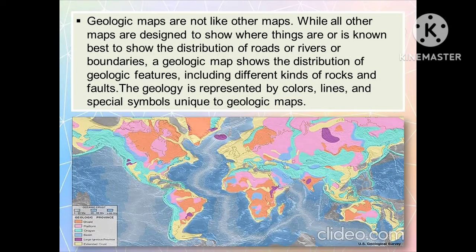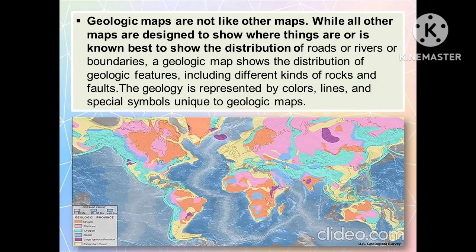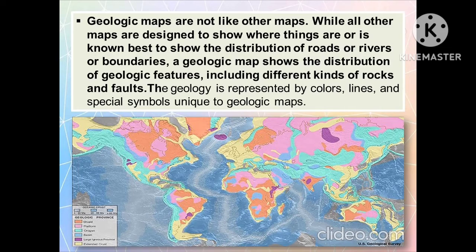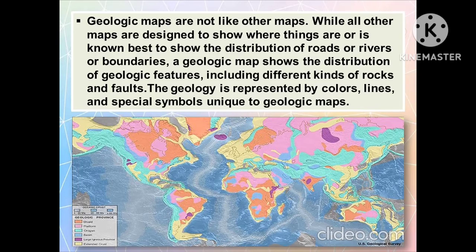Geologic maps are not like other maps. While other maps are designed to show where things are — best known to show the distribution of roads, rivers, or boundaries — a geologic map shows the distribution of geologic features, including different kinds of rocks and faults. The geology is represented by colors, lines, and special symbols unique to geological maps.